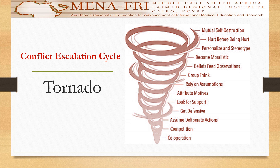Conflict escalation can start with cooperation, then turns into competition, then to assumed deliberate action, becoming defensive, looking for support, and then relying on assumptions. We are gradually transforming into an immature level of emotional interaction, where assumptions affect our observations and then our interactions. The team member personalizes and stereotypes other team members, ending in what is called the tornado, which can require outside help to resolve. This conflict escalation tornado demonstrates how conflict can quickly escalate out of control. Always remember these words: hurt people hurt people.